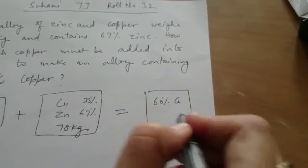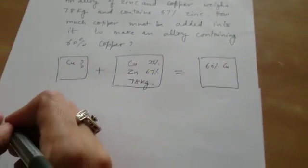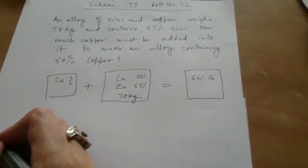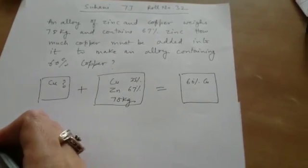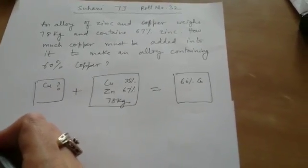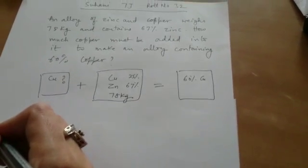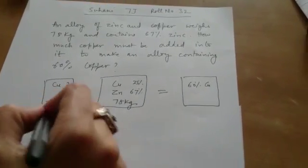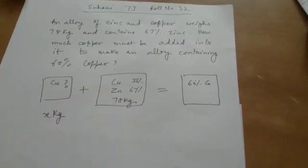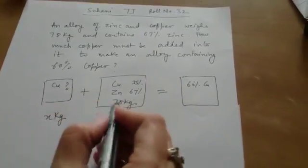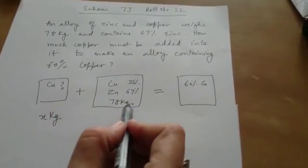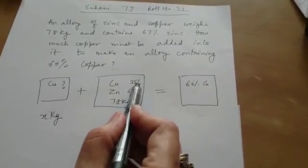Tell me how you will do this? Ma'am, first we will assume that when we will add the copper, the quantity we are adding be X. Okay. Let X kg of copper must be added to 78 kg, 33% copper.